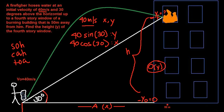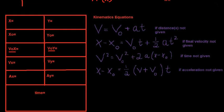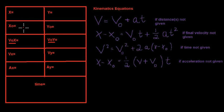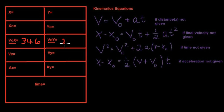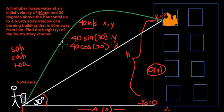When you plug that into your calculator, the initial velocity in the x is going to be 34.6 meters per second. And when you do 40 sine of 30 degrees for the y, you get 20 meters per second. I won't label the units since we know velocity is in meters per second.